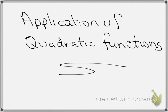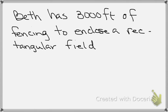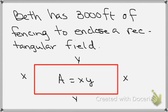In this video, we're going to look at applications of the quadratic function. The problem says Beth has 3,000 feet of fencing to enclose a rectangular field. She has 3,000 feet to go around the field, and she wants to find the maximum area she can enclose and the dimensions x and y of the field.